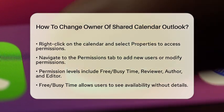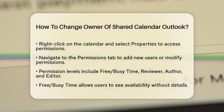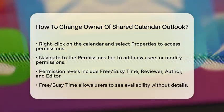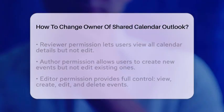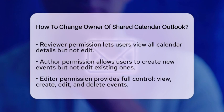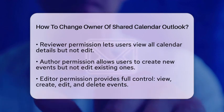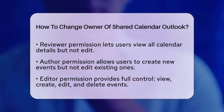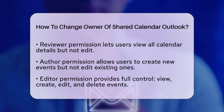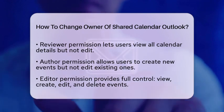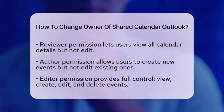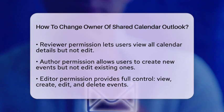If you want to give someone more control, you can assign them the Author permission. This allows them to view all details and create new events, but they cannot edit or delete existing ones. The Editor permission is the most comprehensive, allowing users to view all details, create new events, and edit or delete existing events.